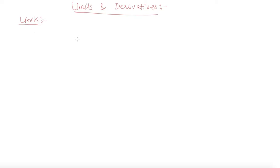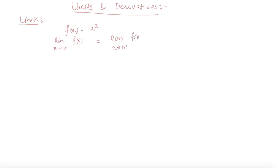Let us say a function is given to us as f(x) = x² and we need to check whether the limit exists at x = 0 or not. For this, we need to check whether the limit as x tends to 0 minus — coming from the left hand side — is equal to the limit as x tends to 0 plus of f(x). If both these limits are equal, then we can say that the limit exists, or you can say the function is continuous.